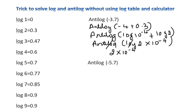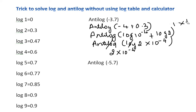You may have a doubt about how minus 4 is written as log of 10 to the power of minus 4. Minus 4 can be written as minus 4 into log 10. Since the value of log 10 is 1, minus 4 into 1 gives minus 4 itself. I hope you understood this first question.